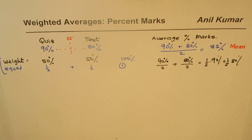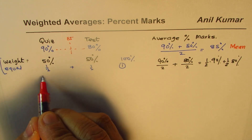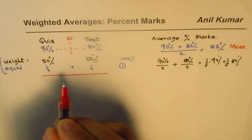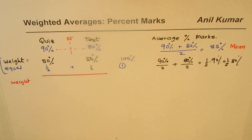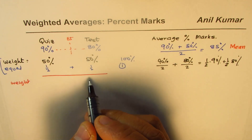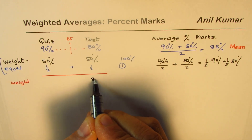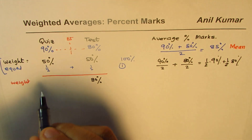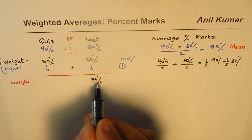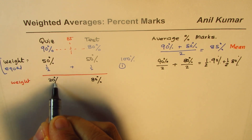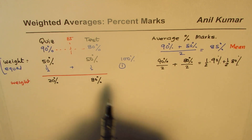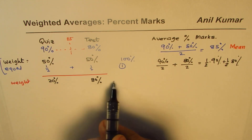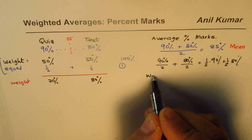If I say different weights — that the test is more important — so the weight of test is 80 percent and that of the quiz is 100 minus 80, just 20 percent. Then what happens to the average? In such cases, since their weights are different, we call this a weighted average.